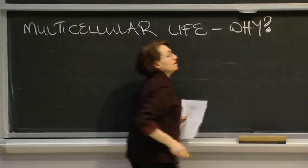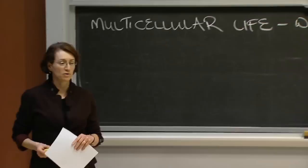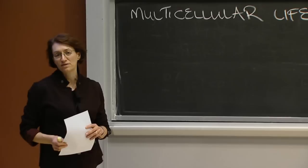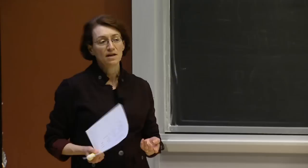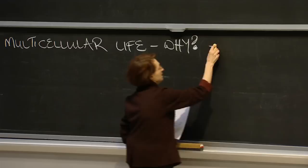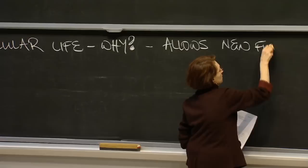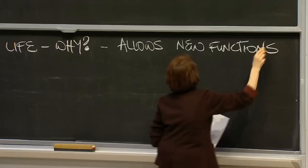A trite answer might be that it's more interesting, but that is actually a very poor answer. There is a much better answer: if you have something made of lots of cells, different parts of that organism can specialize and do different things. You can get a diversification of function, which allows the organism to colonize new parts of the Earth, interact with its environment in different ways, and allows a much greater complexity of life. The answer is that multicellularity allows new functions to evolve and greater complexity of life to develop.